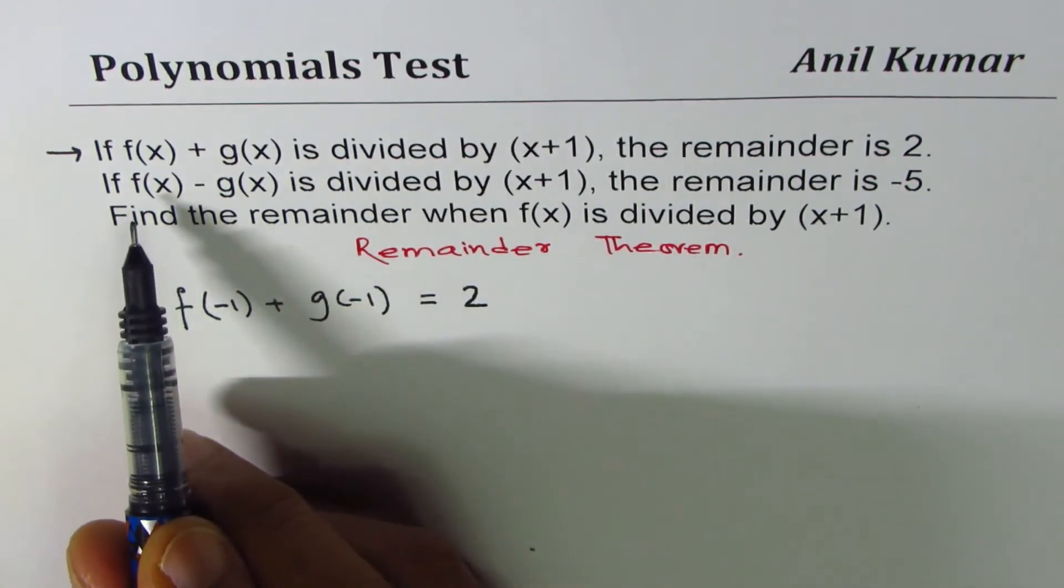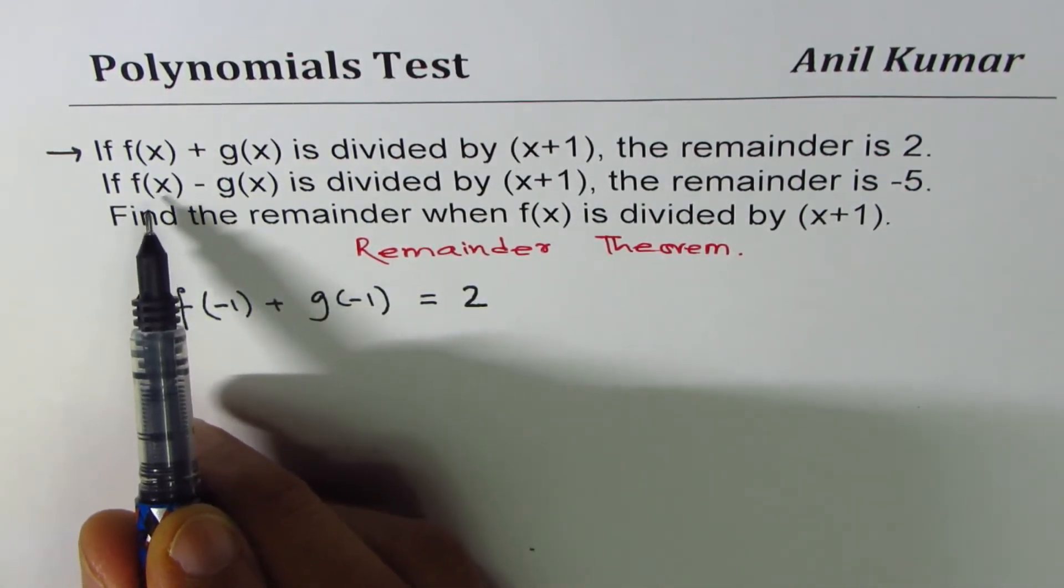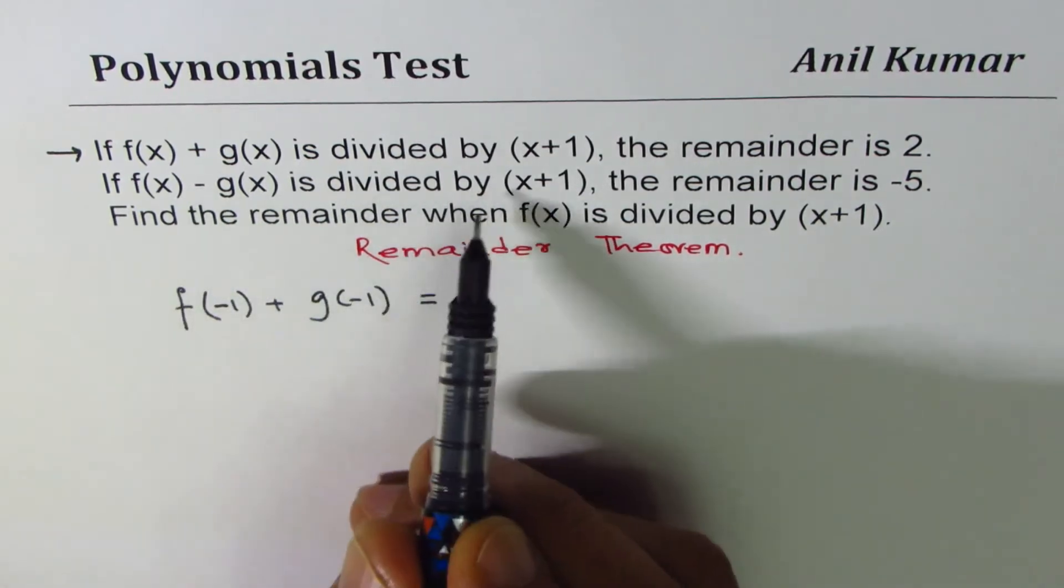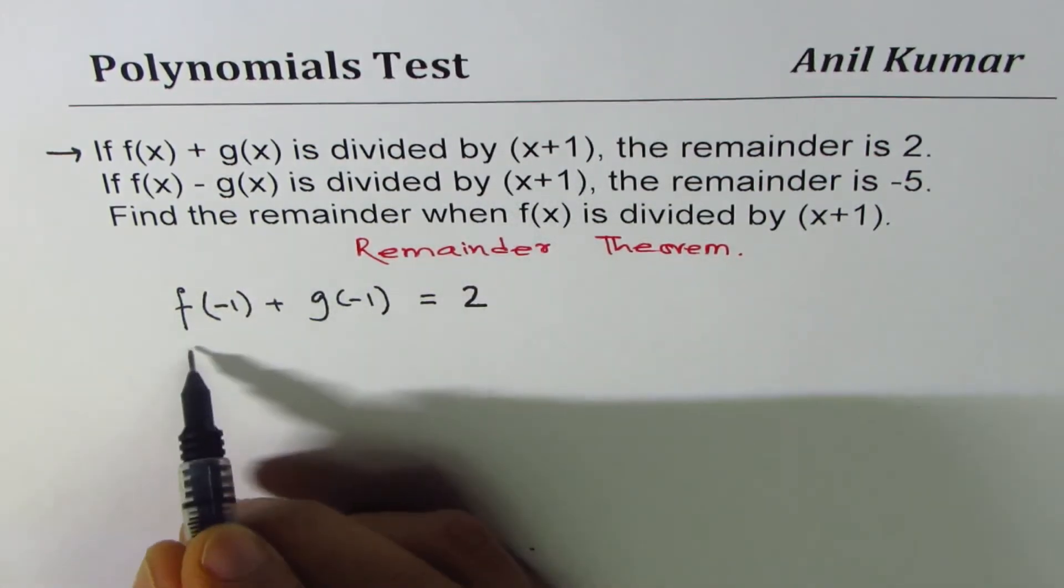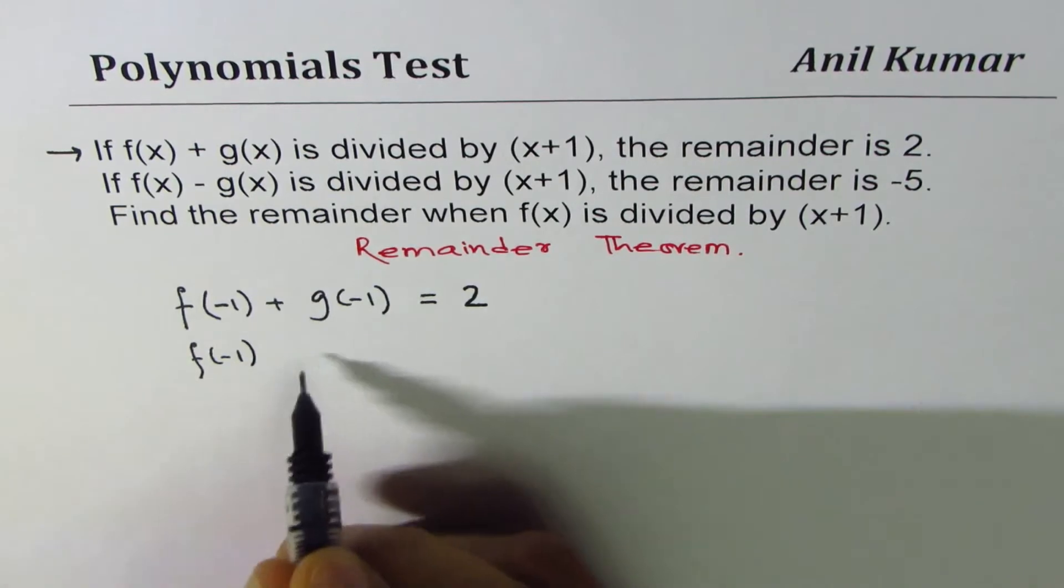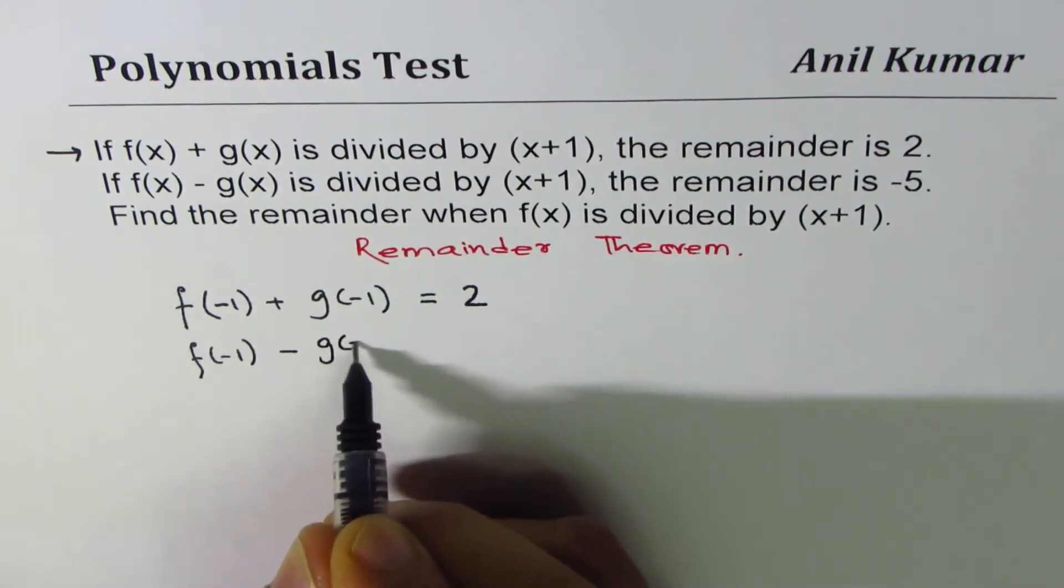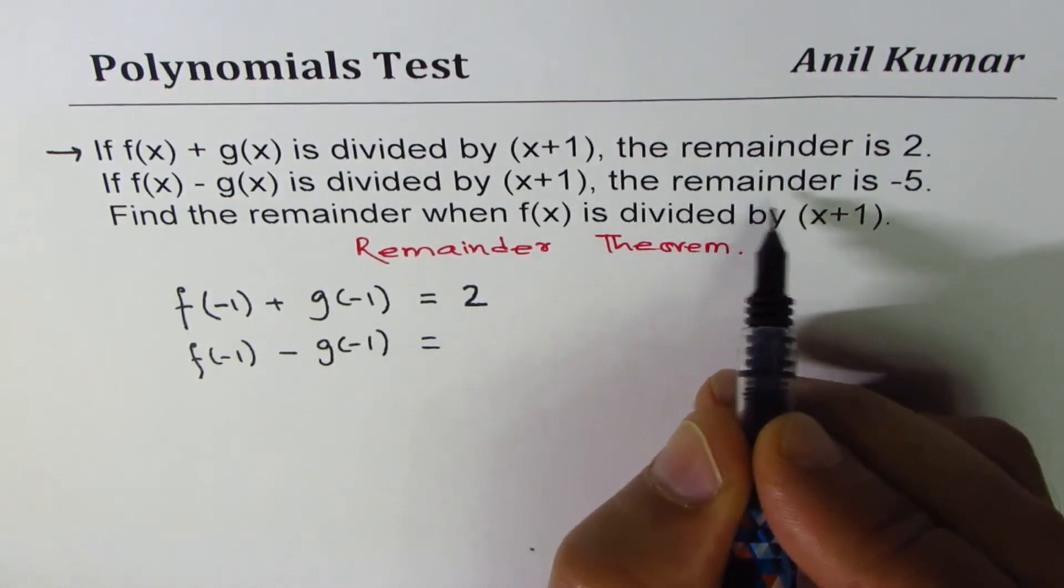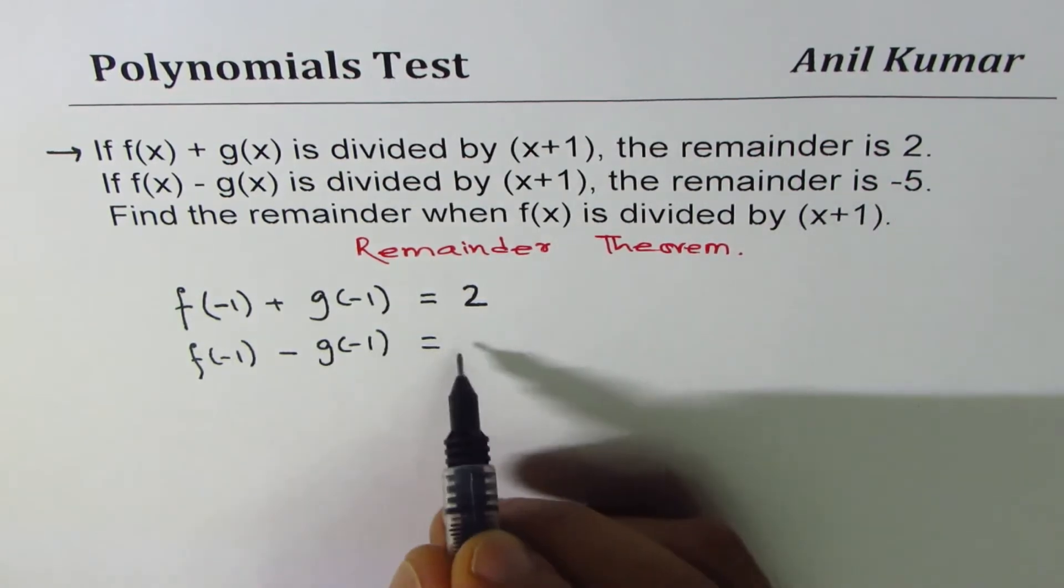Similarly we can write the second equation. If f(x) minus g(x) is divided by x plus 1, then f of minus 1 minus g of minus 1 is equal to the remainder which is minus 5.